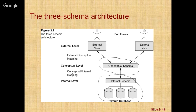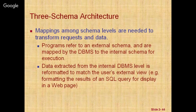If the request is a database retrieval, the data extracted from the stored database must be reformatted to match the user's external view. The process of transforming requests and results between levels is called mapping — that is, mappings among the different requests and results between schemas.